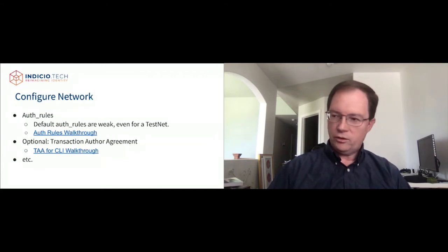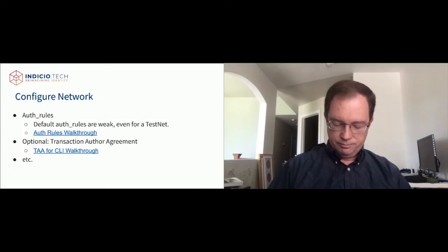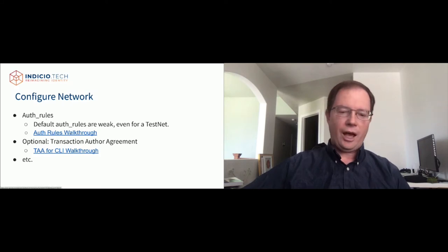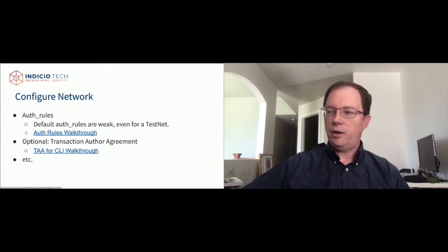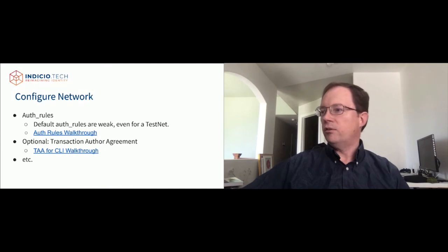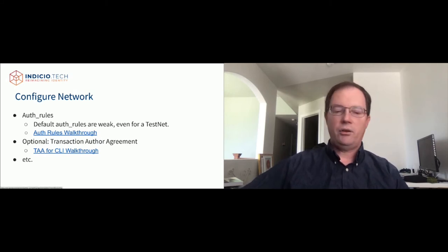Once the network is up and running, there are a couple of configuration steps you'll want to perform. The first is auth rules. The default auth rules that come with the Indy node are a bit weak, even for a test net, so I recommend going through the auth rules walkthrough to configure your authentication rules. Auth rules determine how many signatures each transaction needs to be written to the network and who can write to the network. This covers administrative tasks like how many trustees are needed to add or remove a steward, add a node, etc. If you're running a public network with trustees from multiple companies, you don't want one trustee to have enough power to bring down the network.